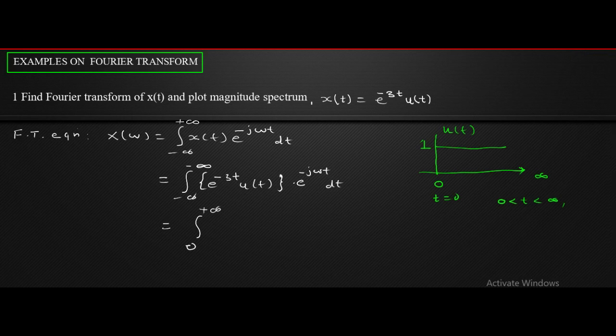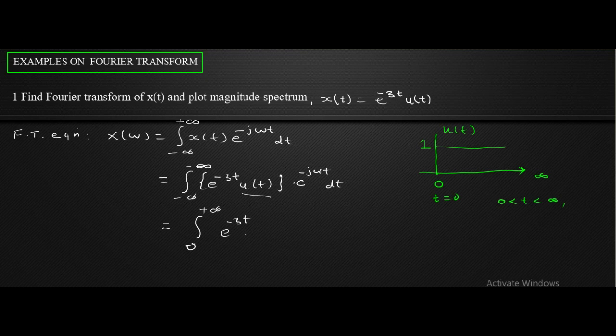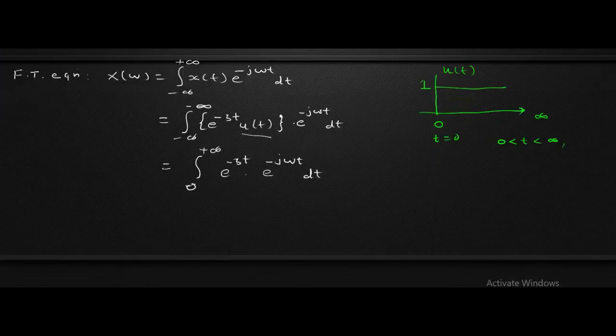So the integration is from 0 to plus infinity. E raised to minus 3t remains. We have removed u of t because u of t equals 1, and because of the presence of u of t, the limit changed to 0 to infinity. The second term is e raised to minus j omega t, dt. We simplify by using the property: e raised to ax times e raised to bx equals e raised to (a plus b)x.